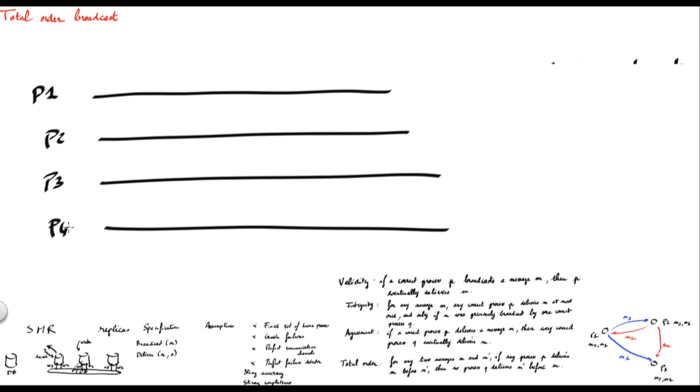Using this perfect failure detector, it is very easy to implement leader election. Processes simply take as leader the first process in their list of alive processes. This simply assumes that processes are ordered, which can easily be used by, for instance, using the IP address of the machine as identifier.